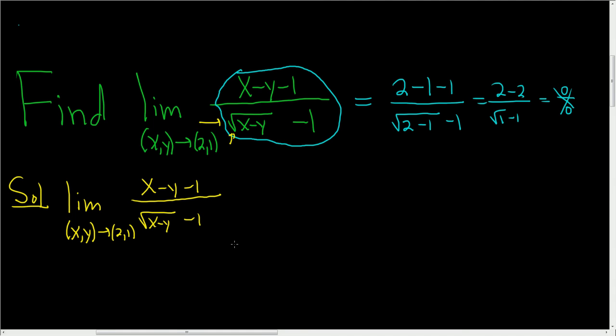And so to rationalize we're essentially going to multiply by 1. We're going to multiply by the so-called conjugate of the denominator. That is the square root of x minus y plus 1. And then you divide by the same thing. So you're basically multiplying by 1.